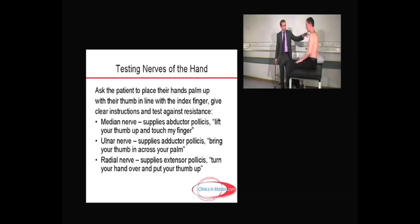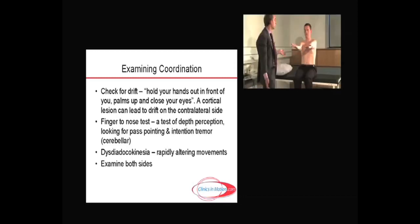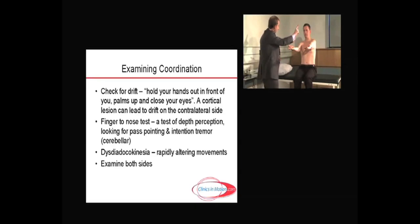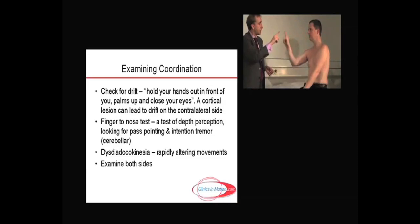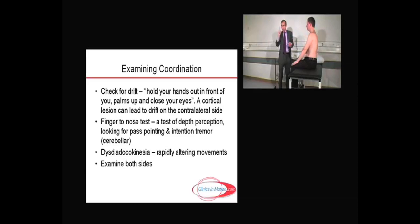After observation, tone, and power, you do coordination. Ask the patient to put hands out in front, turn palms up, and close their eyes — always check for drift. A cortical lesion may lead to drift of one side. Then open the eyes: touch your nose with your index finger and then touch my finger, back and forth as quickly as you can. I change my finger's position only in depth, not side to side — this is a test of depth perception. Looking for intention tremor and past-pointing — signs of a cerebellar problem.